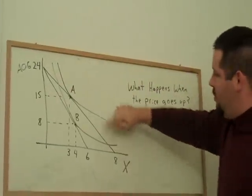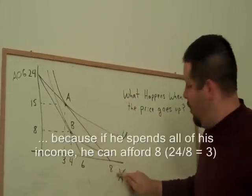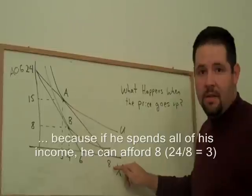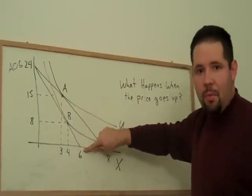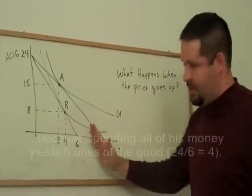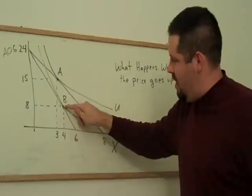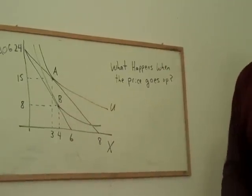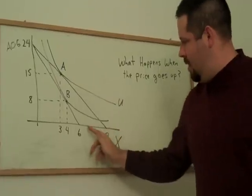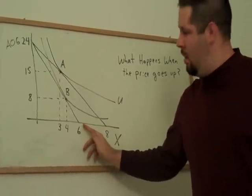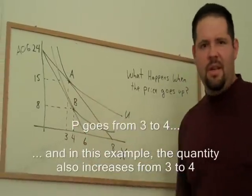This budget line here, on which the optimal bundle is A, has a price of $3. So you can afford $3X if you spend all of your money. This budget line here has a price of $4. So you increase the price, and notice that bundle B is right here.